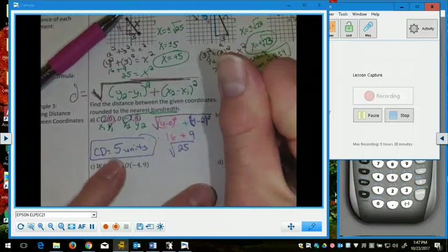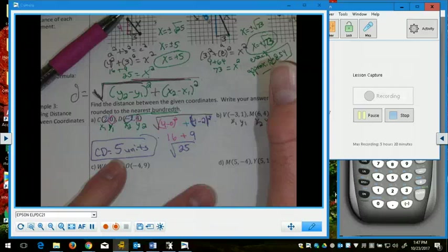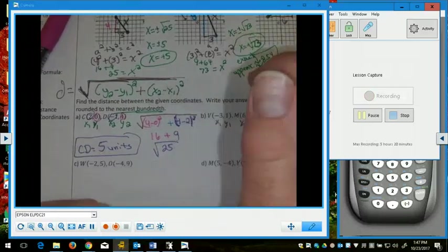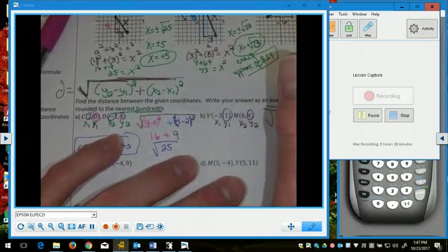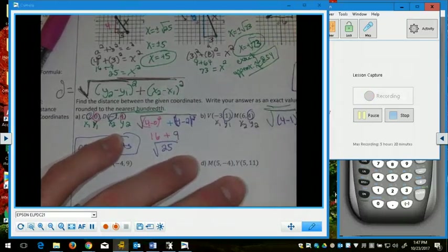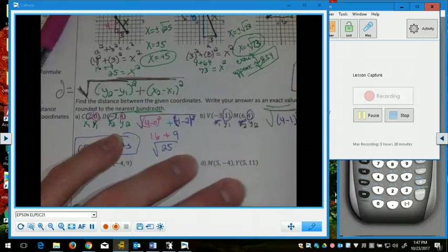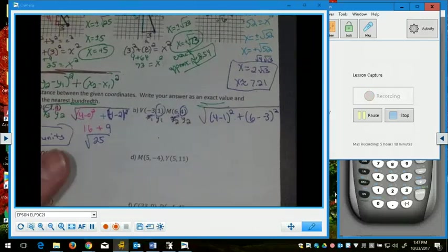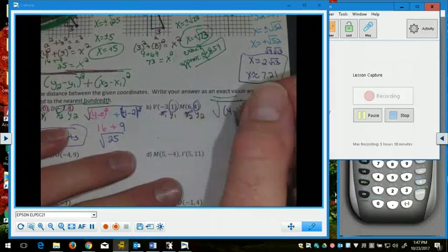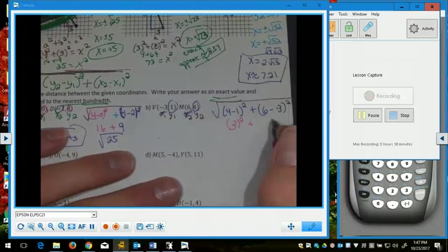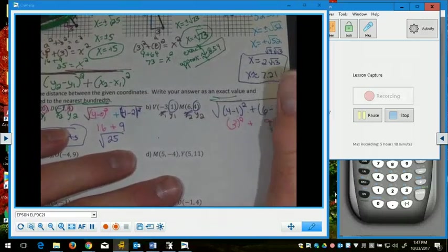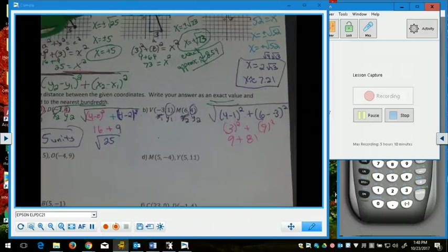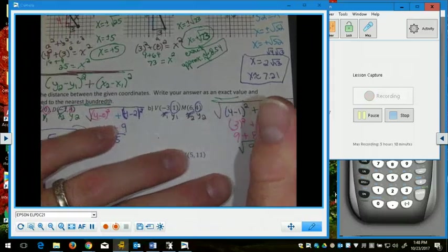For letter B, we're going to do the same thing. This is my x sub 1, y sub 1. This is my x sub 2, y sub 2. I'm going to follow the distance formula, which is to subtract my y's. y sub 2 minus y sub 1. I have to do x sub 2 minus x sub 1, so 6 minus negative 3. I should probably write these out since it's the first time you're learning it. 4 minus 1 is 3 squared. 6 minus negative 3 is really 9 squared. 3 squared is 9, 9 squared is 81. So when I put these together, it's 90. I have the square root of 90.